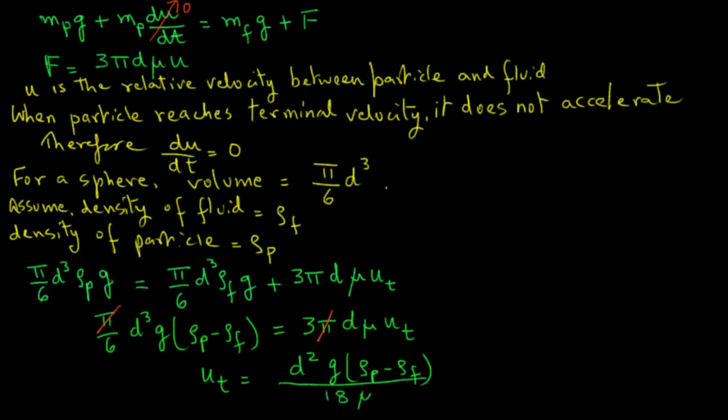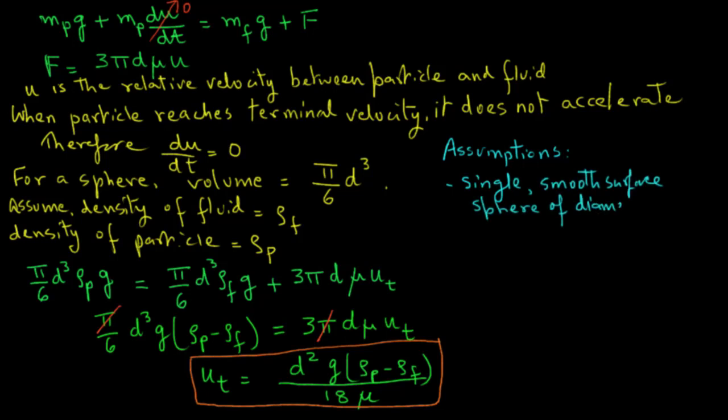So this is the equation for terminal velocity. Let's briefly look at the assumptions that we used in deriving this equation. First, this equation was obtained for a single smooth surface sphere of diameter d. This sphere is falling in a homogeneous liquid, and there is no effect of other particles that are present in the fluid on the motion of this spherical particle.